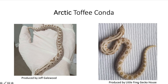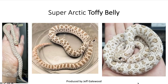Now let's see what we get when we mix the toffee with the super arctic version of the arctic gene. You've probably already seen this slide from my super arctic presentation. It's even more of a contrast between the background and the pattern, and you see those striking jet-black eyes because both the pupil and iris are black. This is a very pretty animal — the super arctic toffee.